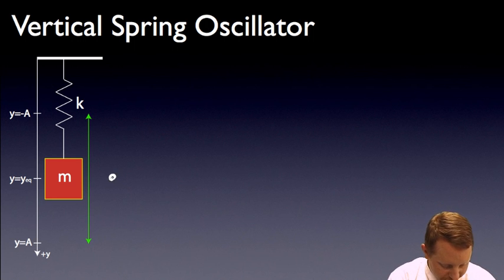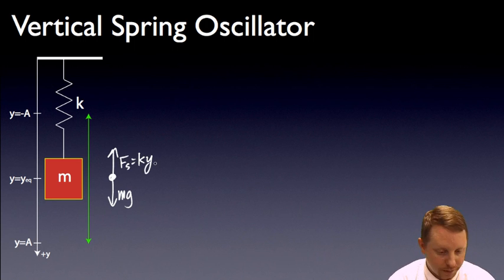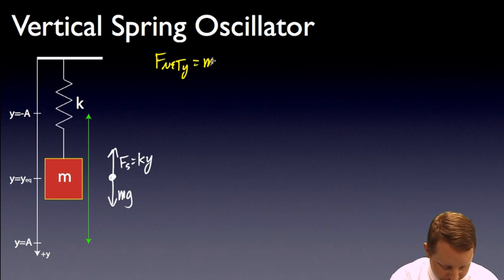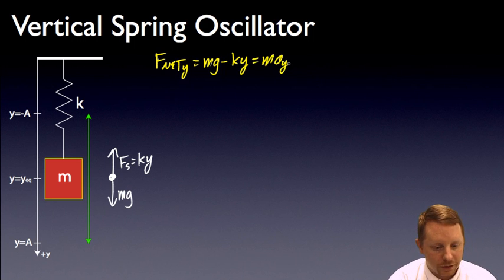So, I'm going to start with the free body diagram of this mass when it's in its equilibrium position. We've got the force of gravity or its weight down, and we have the force of the spring, ky, pointing up. So again, we'll start with Newton's second law and write that the net force in the y direction is going to be mg minus ky.